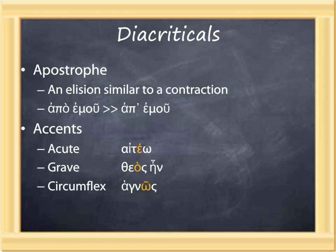Other diacriticals occasionally show up in Greek. For example, if two vowels from the ending of one word and the beginning of another word are both short, one may drop out — as in the example apo emou becoming ap emou. It's like a contraction, an elision; notice the omicron dropped out and the apostrophe was added. Greek also places accents on particular syllables in the word — again, later editorial additions to help with enunciation. The acute accent goes up to the right, the grave accent goes down to the right, and the circumflex is a squiggly line or small tent above the vowel.